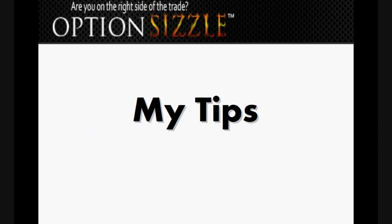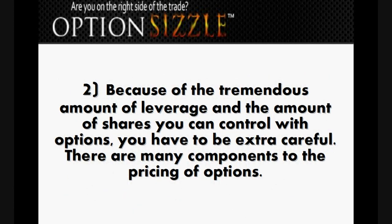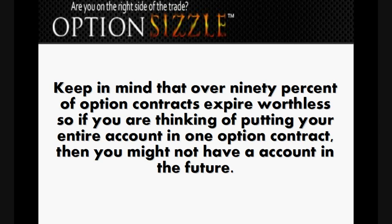Here are my tips. First, a stock option is usually bought at a significantly lower price than the actual price of the underlying asset, so you don't have to put up as much money to control the same number of shares as if you were buying the underlying asset directly. Second, because of the tremendous amount of leverage and the number of shares you can control with options, you have to be extra careful. There are many components to the pricing of options. Keep in mind that over 90% of option contracts expire worthless — so if you're thinking of putting your entire account into one option contract, you might not have an account in the future.